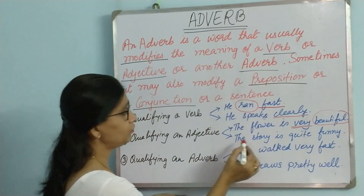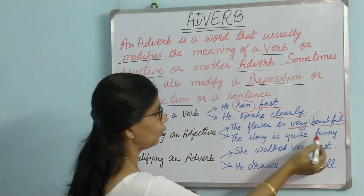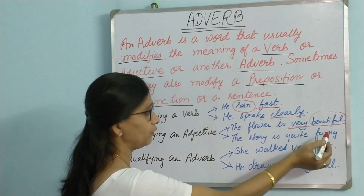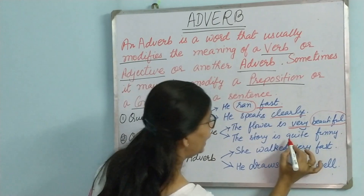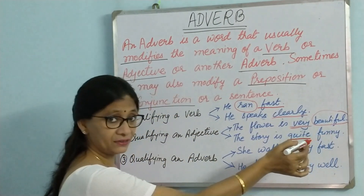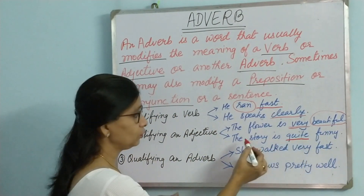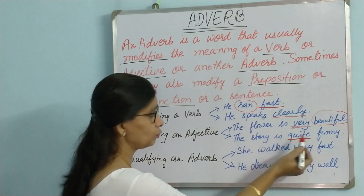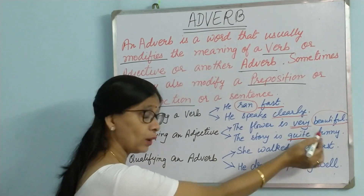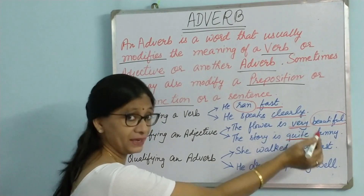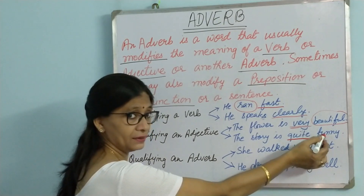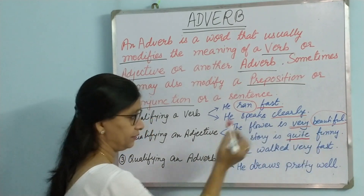Next example: 'The story is quite funny.' Here, 'quite' is the adverb and 'funny' is the adjective. How funny? Quite funny — very funny. So the adverb 'quite' is qualifying the adjective 'funny.'